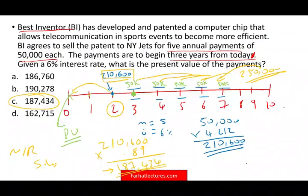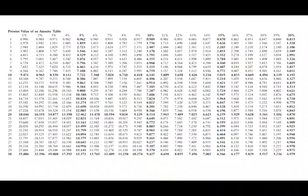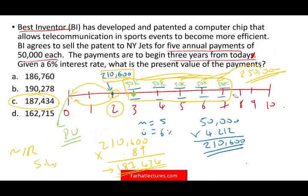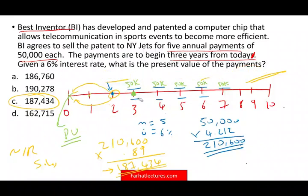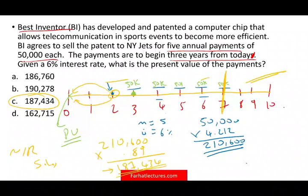I did it this way to illustrate the concept of an annuity — first I worked it as an annuity for year two, then I discounted it using a single payment. Now, how else can you do this? I would go to the annuity table. If you count the years, we have seven years in total. What I would do is take the annuity factor for seven minus the annuity factor for two. The total period is seven, so the present value factor at 6% is 5.582.